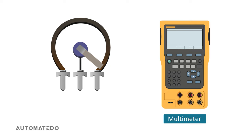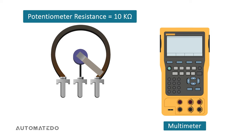Imagine our potentiometer has a resistance of 10 kilo ohms. So, if we hook up the two outer terminals to the multimeter, it shows the maximum resistance of the potentiometer, that is 10 kilo ohms.